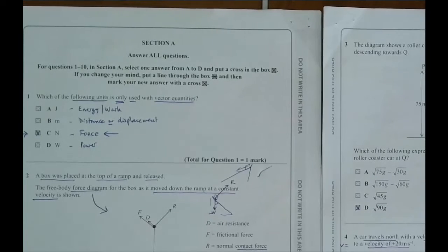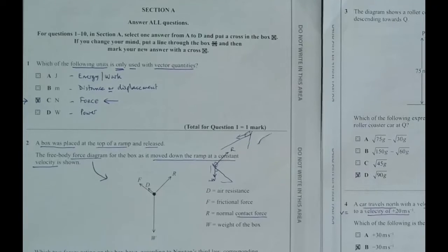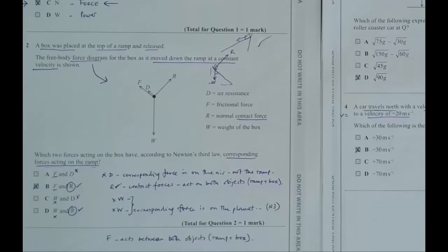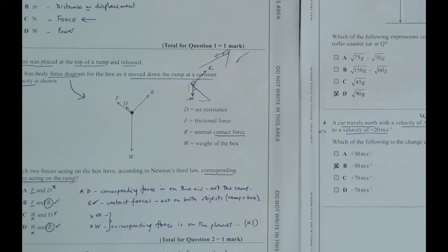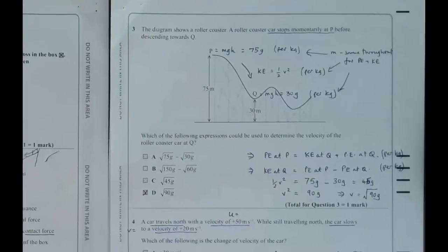So R is a reaction to the contact between the two objects. So it is a Newton's third law pair of forces. And F we've discussed already. W, the corresponding force for the weight, is on the planet. So if the planet is pulling you down, your weight is the corresponding force on the planet. So only B can be correct because R is a contact force on both the objects, the ramp and the box. And F acts between both objects, the frictional force acts between both objects. So it is a corresponding Newton's third law force.